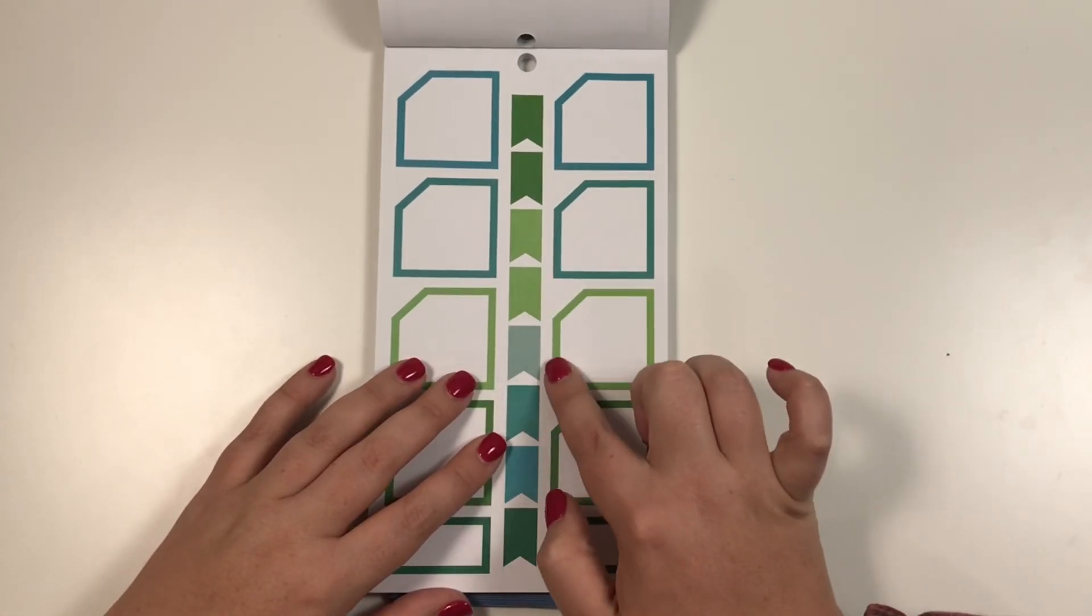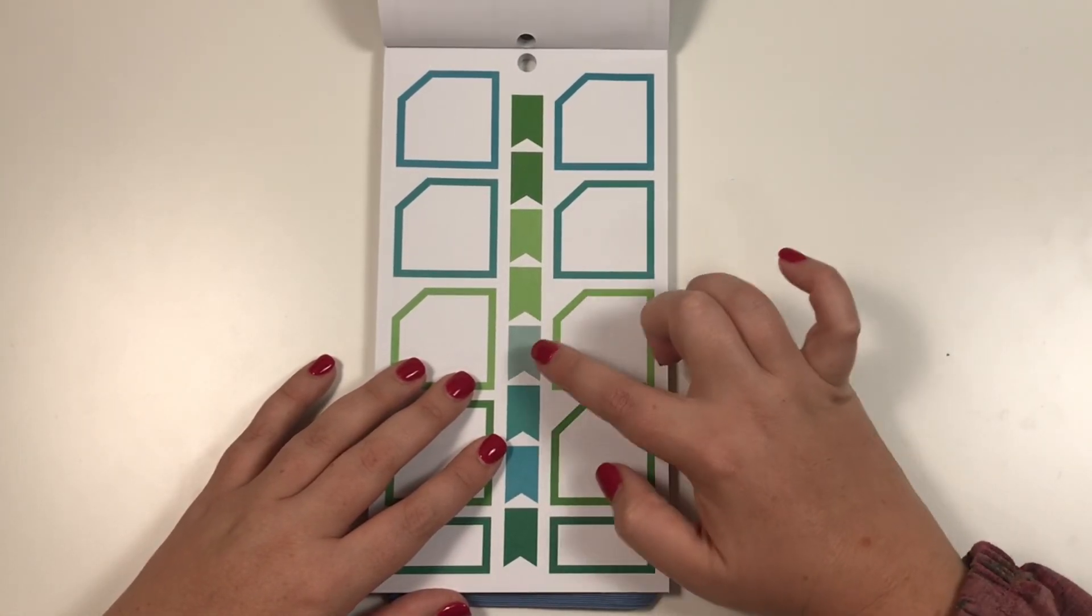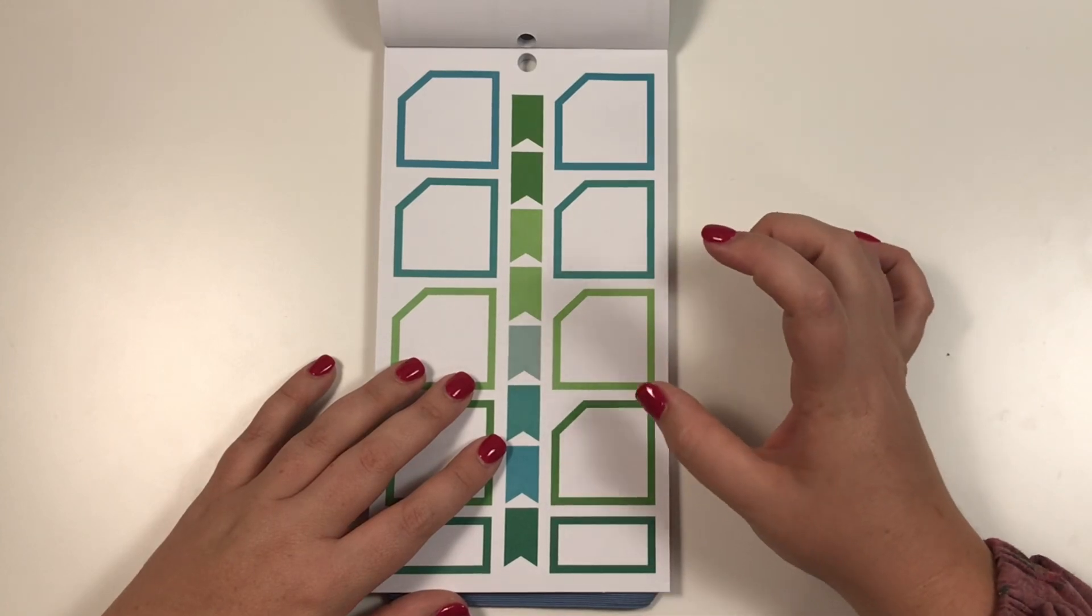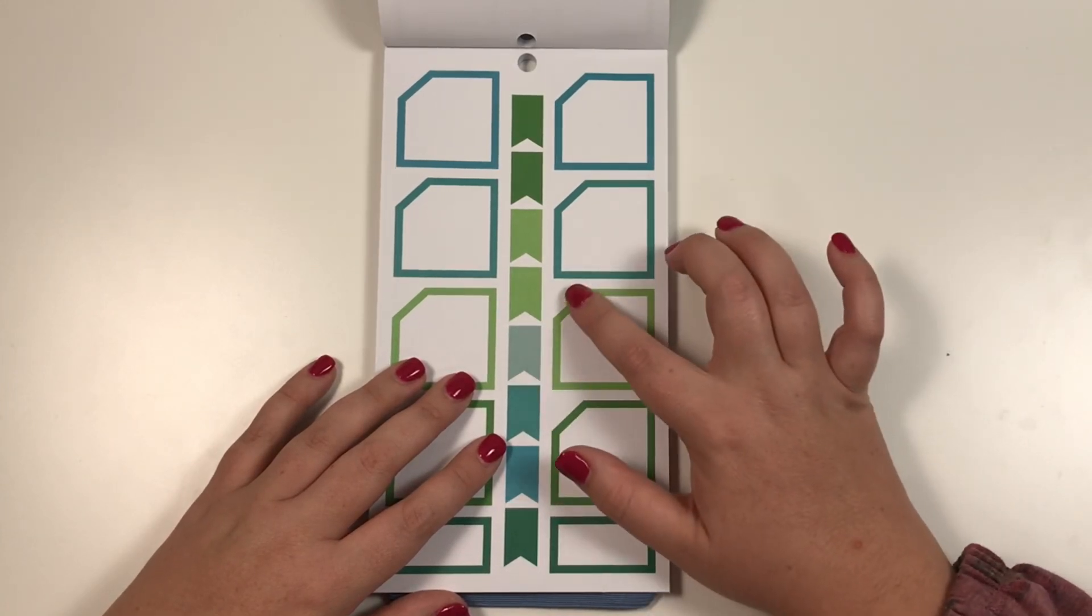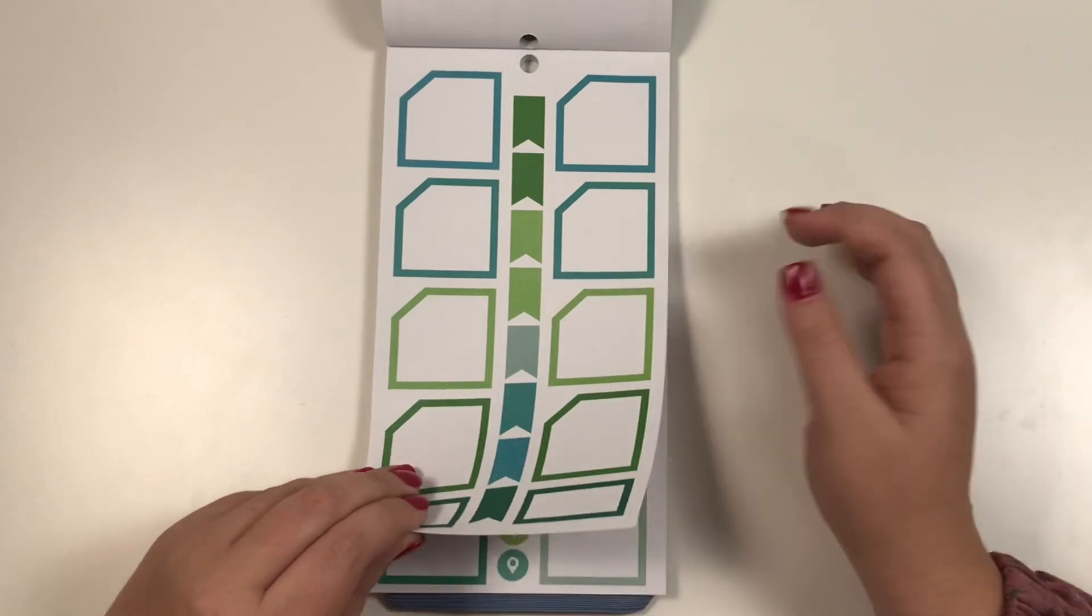These went all the way across, but these have the slash, and that slash is so that you can put this in the monthly view of your planner and still see the date. So that's why it's slashed like that.